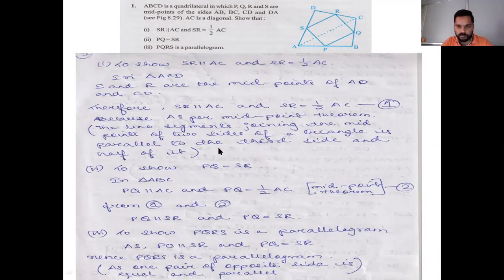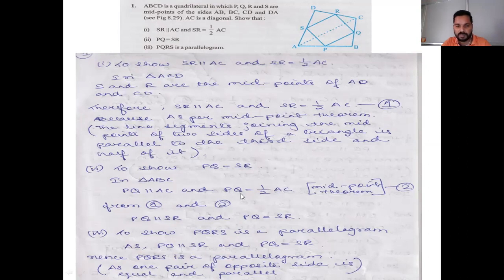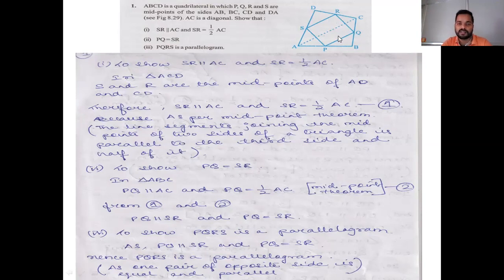From steps 1 and 2: SR is parallel to AC and PQ is parallel to AC, so lines parallel to the same line are parallel to each other — SR is parallel to PQ. Also SR is equal to half of AC and PQ is equal to half of AC, so PQ equals SR. One pair of opposite sides is equal and parallel, so PQRS is a parallelogram.